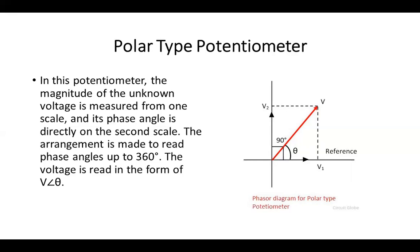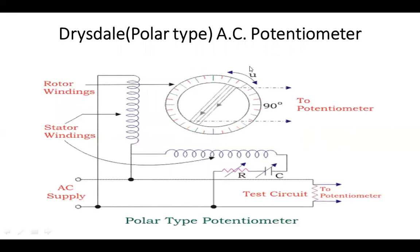The voltage is read in the form of V angle theta. This is a phasor diagram of polar type potentiometer. Whatever main importance of polar type potentiometer is, we have to study in details about how the polar type potentiometer functions. So, we are taking one example and the name of the example is Drysdale type AC potentiometer. So, we will go in details.